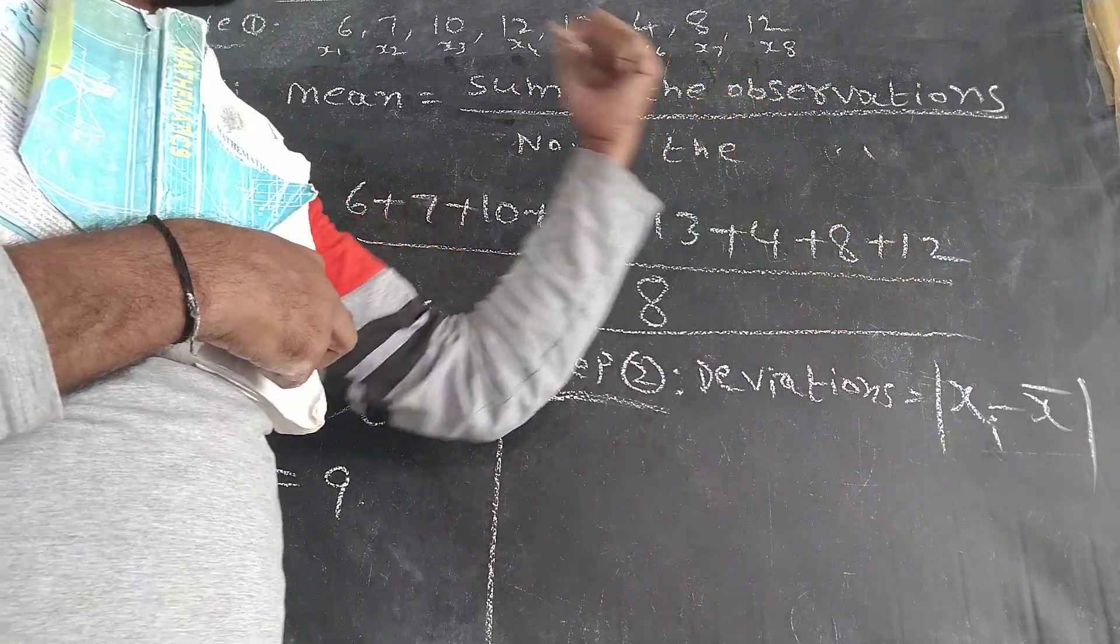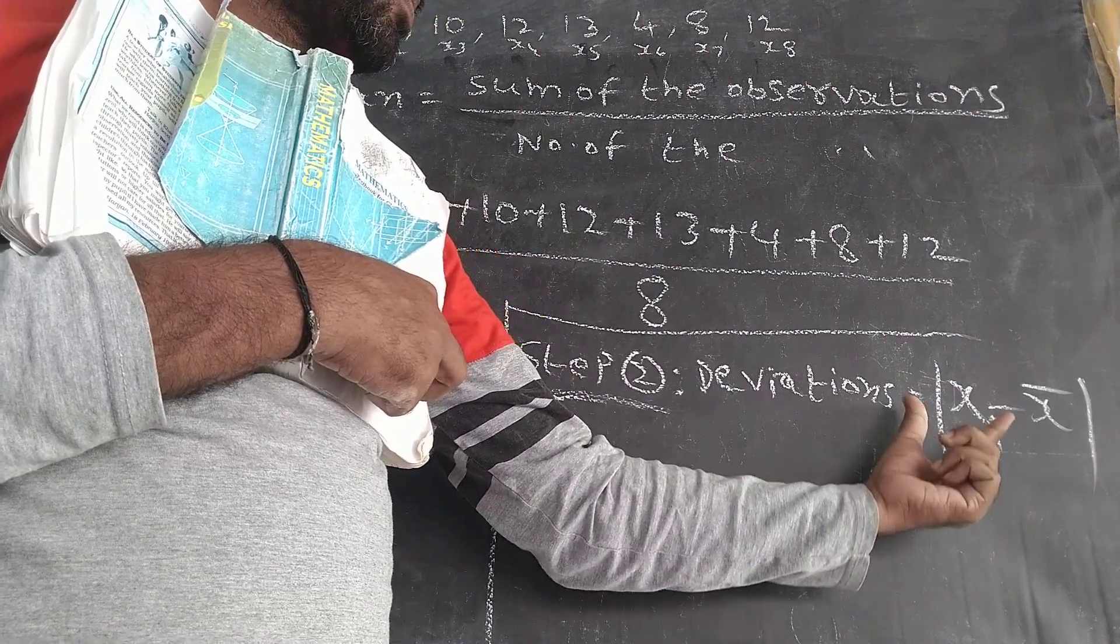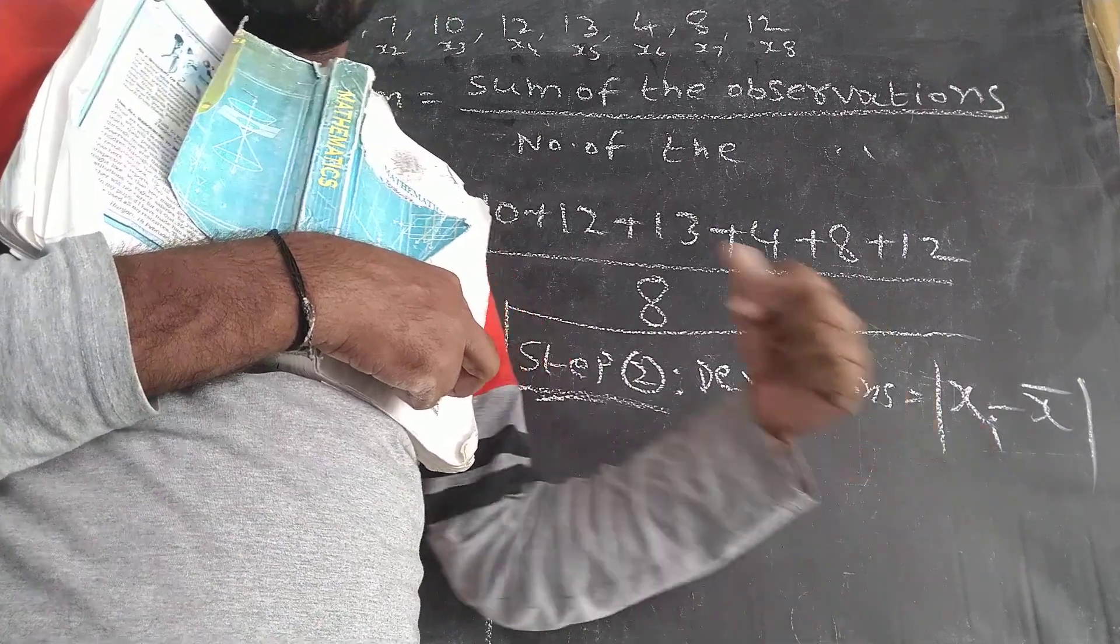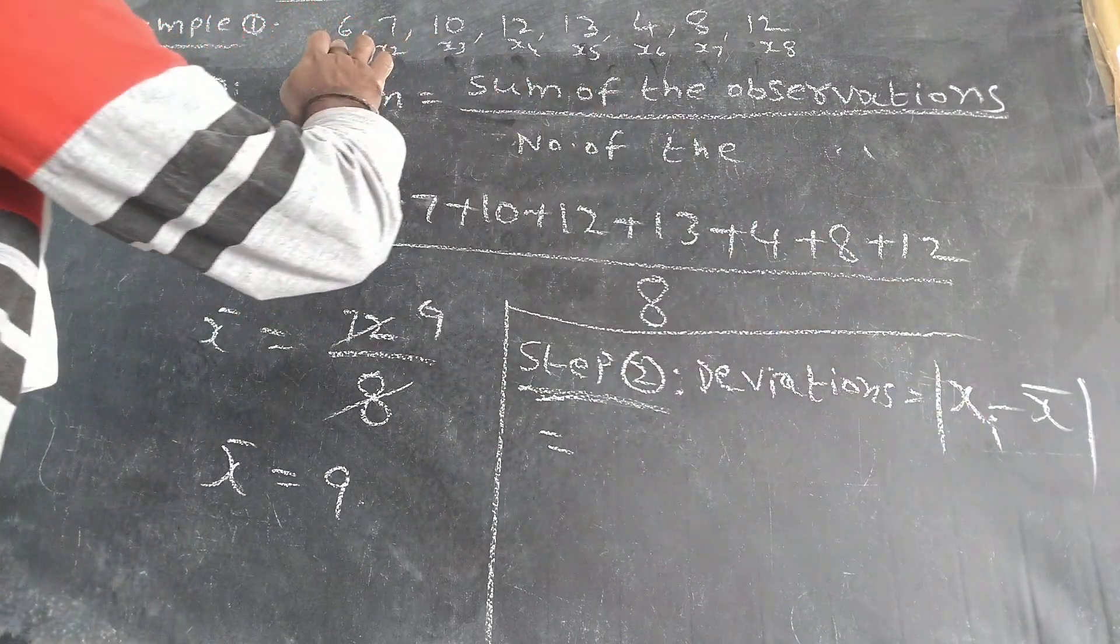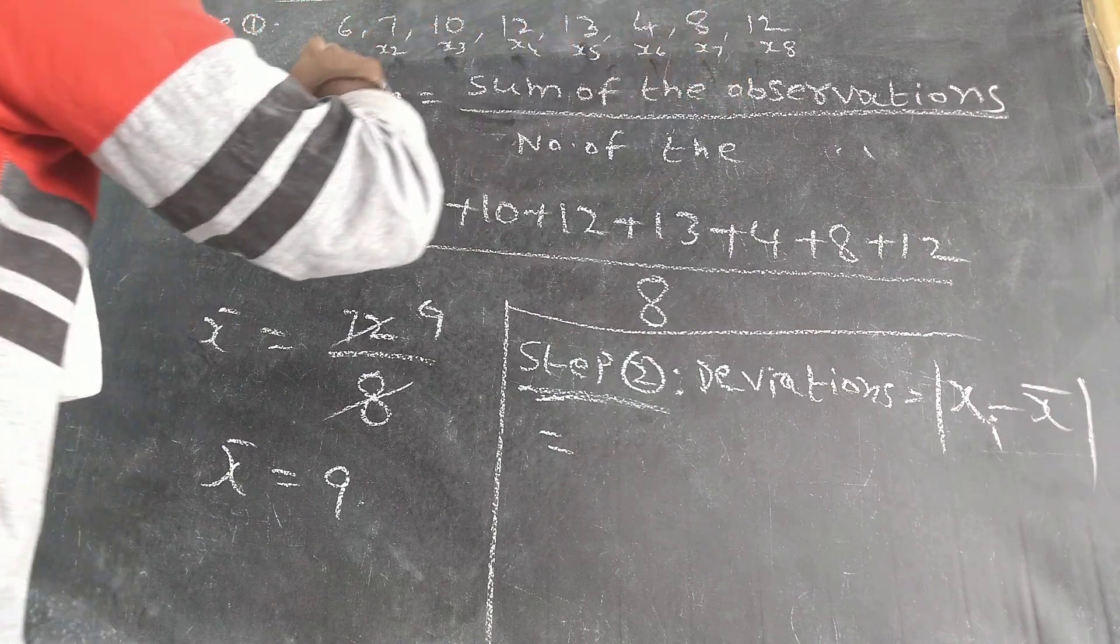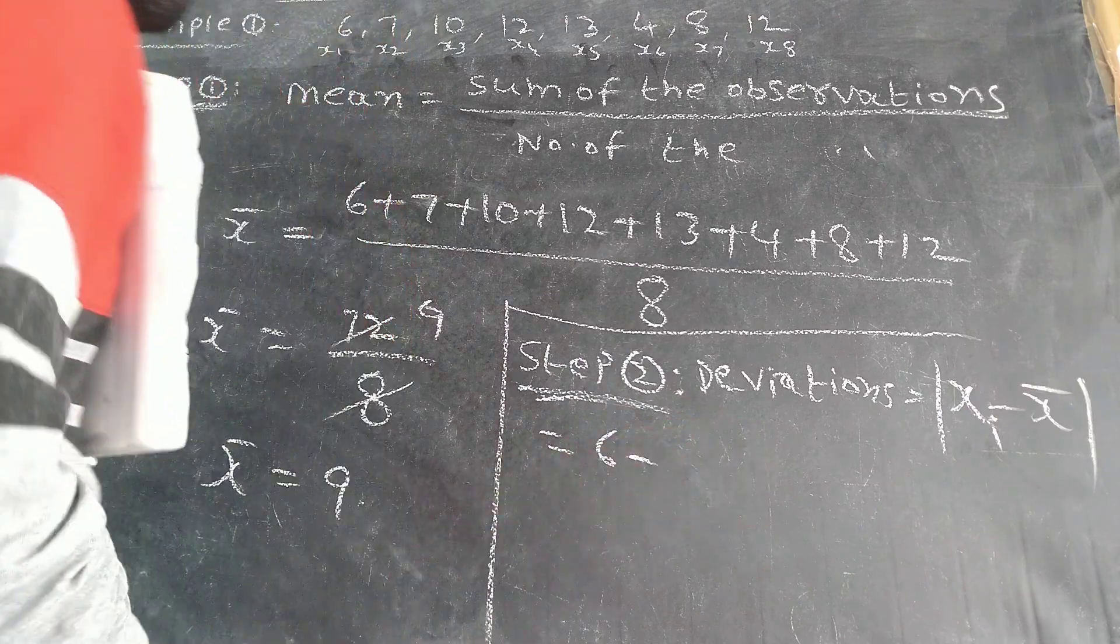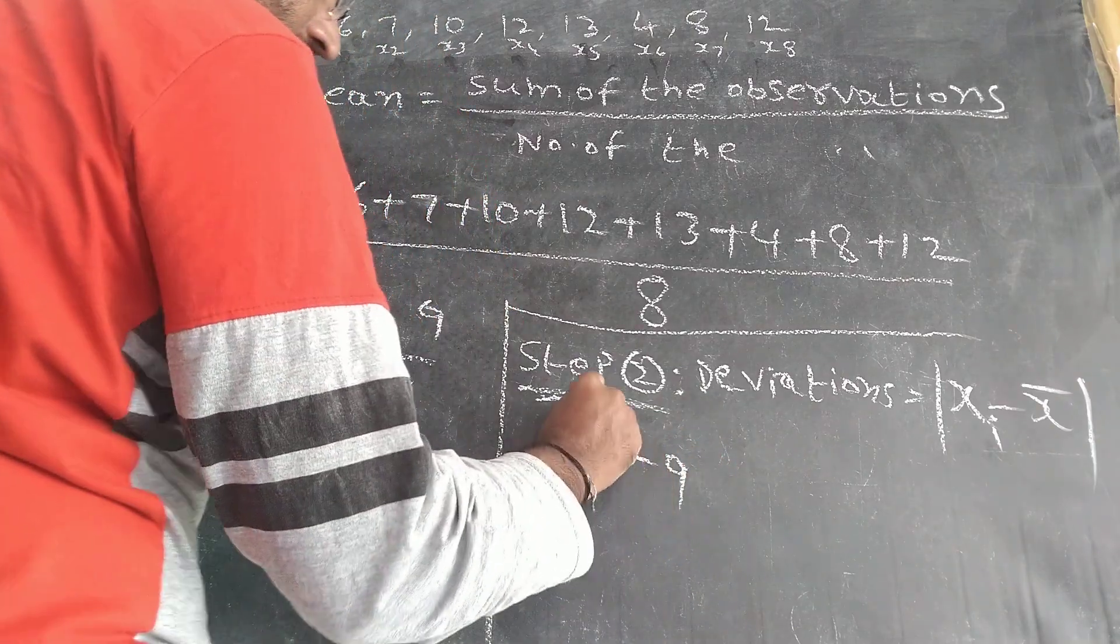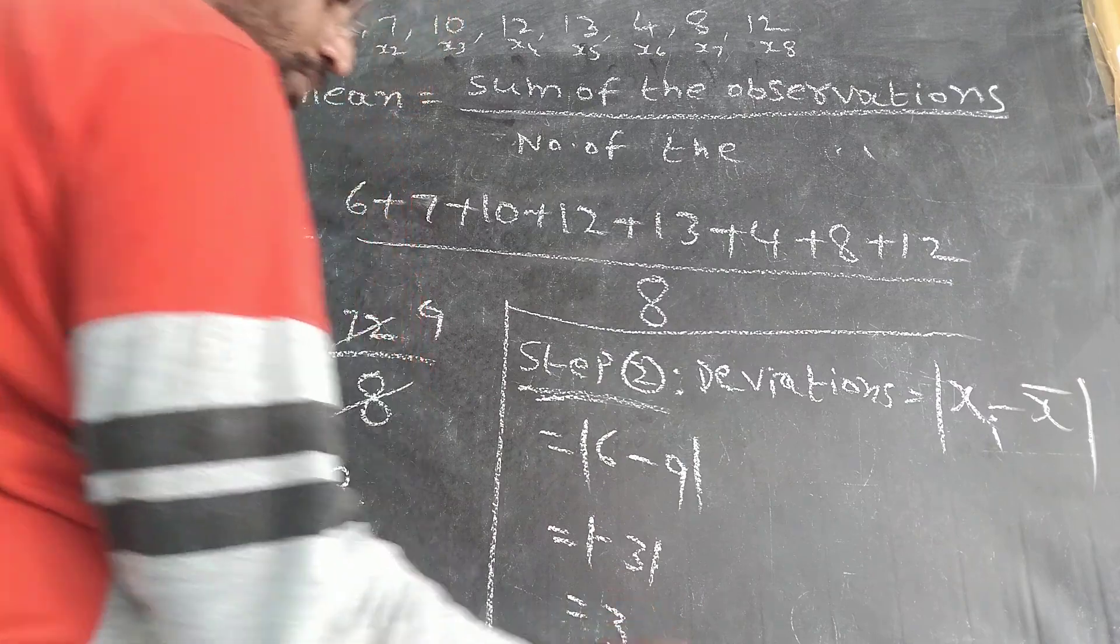First you have to find the deviation. Here is equal to mod of - mod means always positive only. So what you can write? X1 means when i equals 1, X equals 6. So 6 minus what is the mean value? Mean value is 9. So X minus mean: 6 minus 9 equals minus 3. Minus 3 means you can write plus 3.